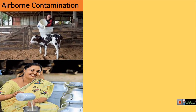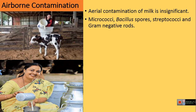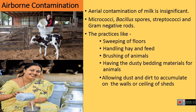The last source of contamination is aerial contamination of milk. Aerial contamination is insignificant compared to microbes from the teat surfaces. Micrococci, Bacillus spores, Streptococci, and gram-negative rods are the major organisms coming from air into the milk. Practices like sweeping floors just before milking, handling hay and feed before milking, brushing animals prior to milking, having dusty bedding material, and allowing dust and dirt to accumulate on walls and ceilings of sheds all increase the aerial contamination of milk.